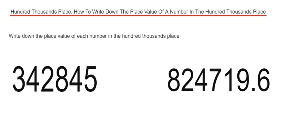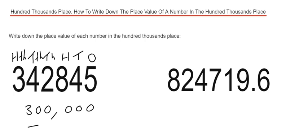So we've got 342,845. We have five in our ones column, four in our tens, eight in our hundreds, two in our thousands, four in our tens of thousands, and the one we're interested in is the three — which is three in our hundreds of thousands. So we can write this down as three hundred thousand.